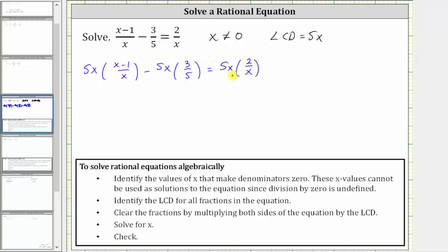And because the products involve fractions, we can write 5x as a fraction with a denominator of one. And now before multiplying, we will simplify out any common factors between the numerators and denominators. So looking at this first product, x divided by x simplifies to one here, leaving us with just five times the quantity x minus one.